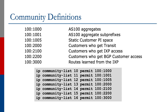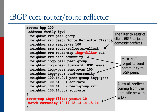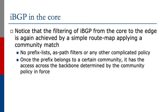So all prefixes coming from the domestic network and the IXP are sent out, but you must not forget to send the community to each IBGP peer — you have to add the send-community directive so that these communities are propagated in the IBGP sessions. You just have a simple route map and you're applying a community match; you don't have prefix lists, AS-path filters, or any other complicated policy. Once a prefix belongs to the right community, it has access across the backbone, determined by what that community should be doing.